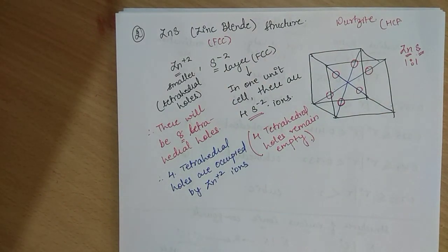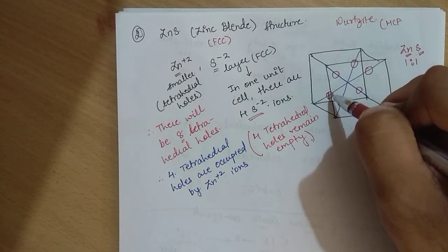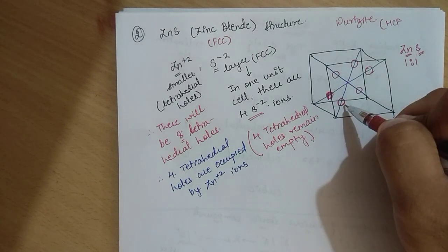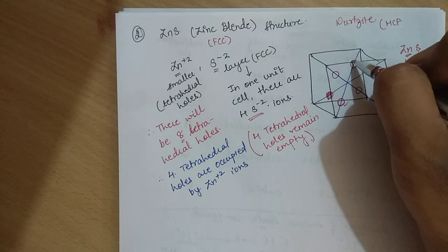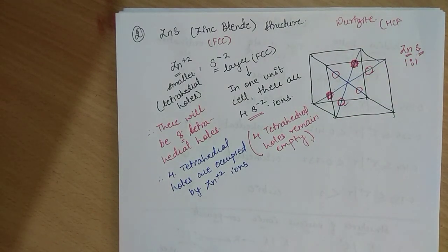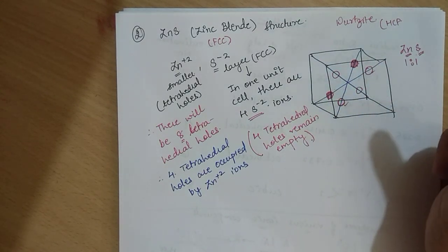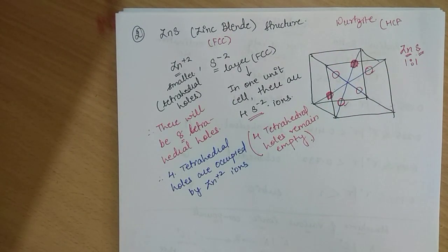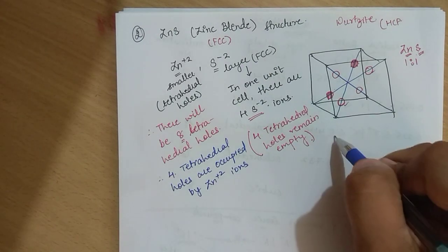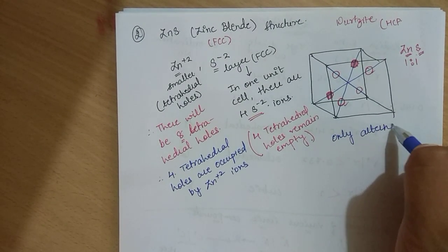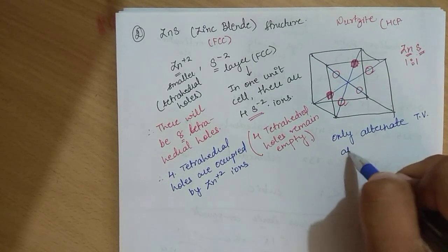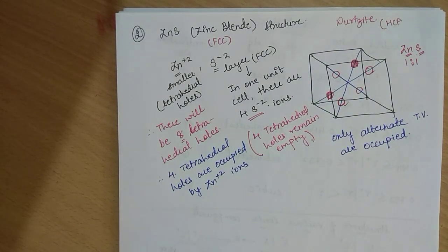So only alternate tetrahedral holes are occupied and the rest remain empty. If one tetrahedral hole is filled, the adjacent one remains empty, and the next one is filled again. So alternate tetrahedral holes are occupied along the body diagonals of the cube — one body diagonal has one tetrahedral hole occupied and the other body diagonal also has one occupied. Only alternate tetrahedral holes are occupied.